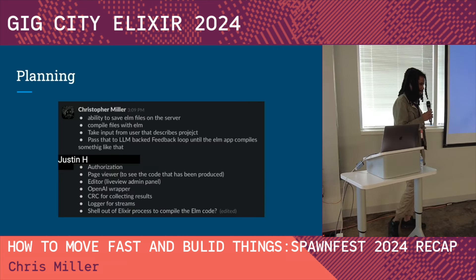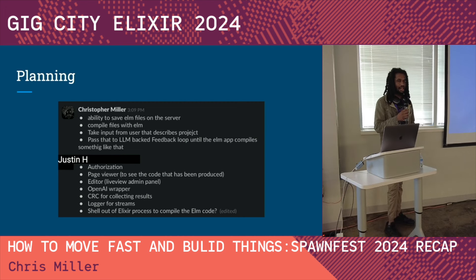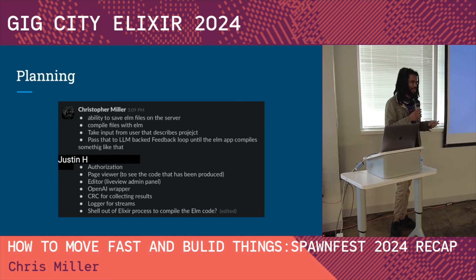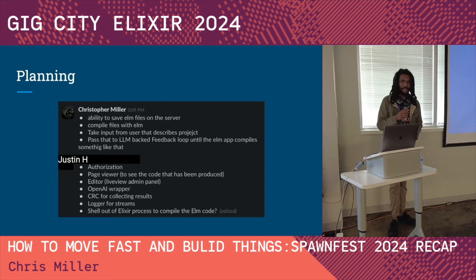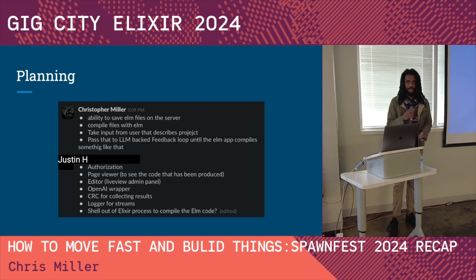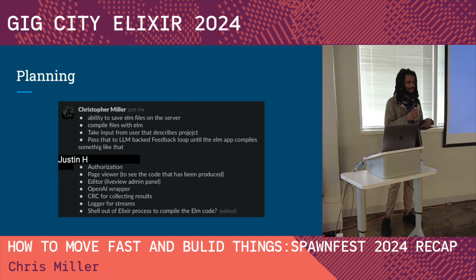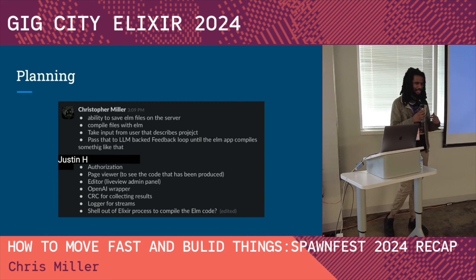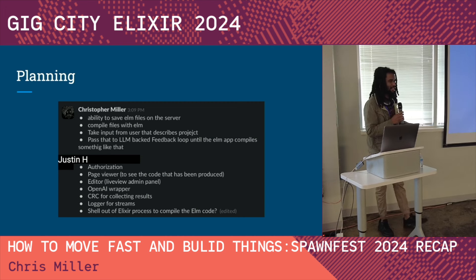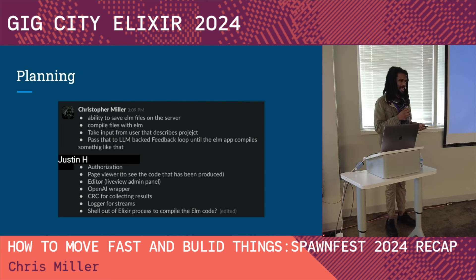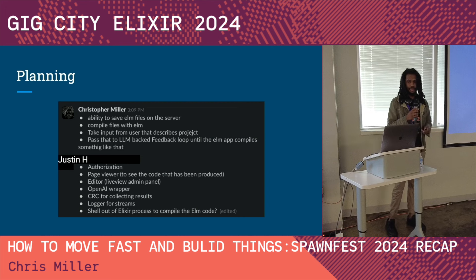I went to my co-worker Justin with the overall idea: use Elm to get an AI to write Elm code that then gets compiled to JavaScript, which becomes the website. The high-level needs were: ability to save Elm files on the server, ability to compile files with Elm, take user input describing the website they want, pass that to a large language model, and get a feedback loop going. Justin agreed and added we'd need a wrapper around the language model, loggers for streams, and the ability to actually see the generated page.